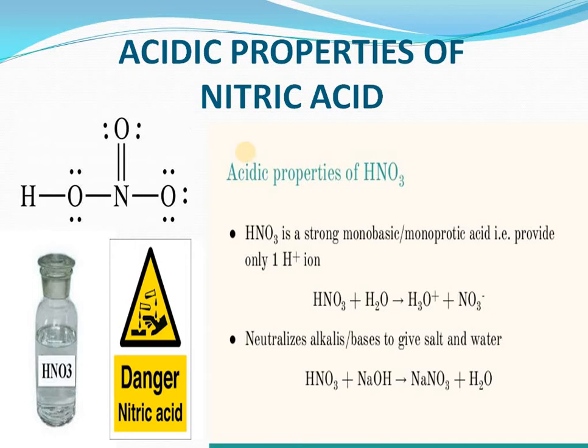Nitric acid is colorless, but sometimes on long standing, nitric acid turns yellow. Why? Because of decomposition — nitric acid decomposes to give NO2 gas. The NO2 gas, being reddish brown, dissolves in the colorless nitric acid solution and turns it yellow. This is the reason. Nitric acid is also corrosive to skin.